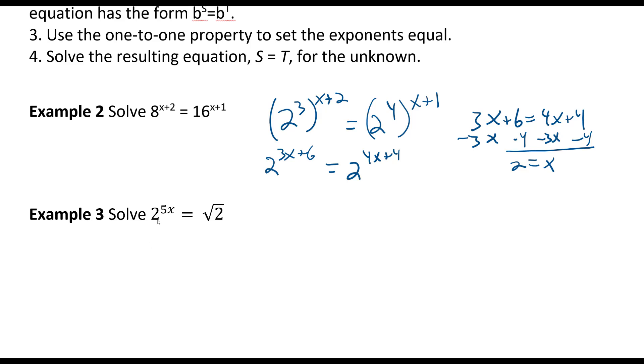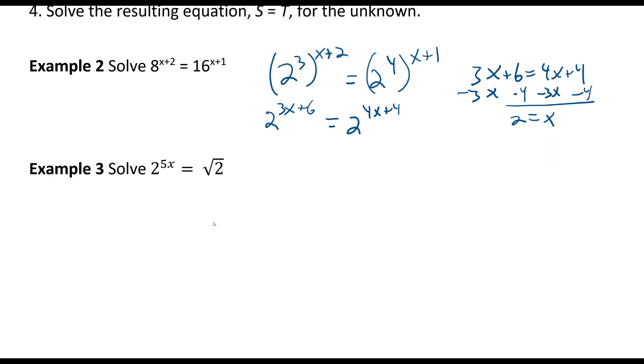Our next one we have 2 to the 5x equals the square root of 2. We can write this as 2 to the 5x equals 2 to the 1 half. So we can set these powers equal to each other, 5x equals 1 half.